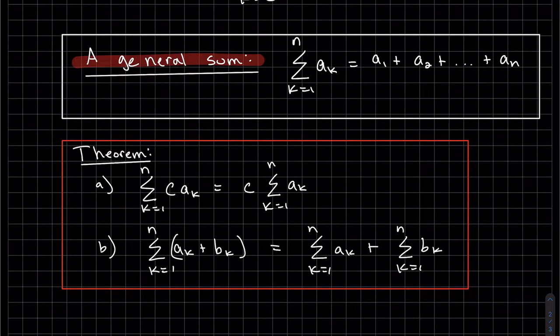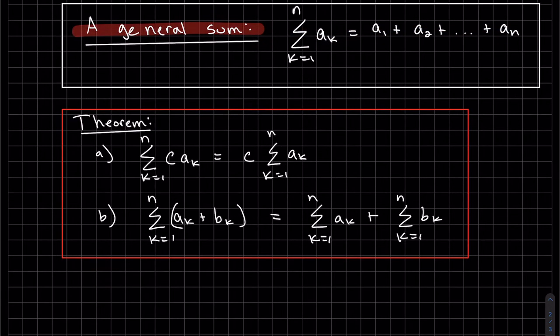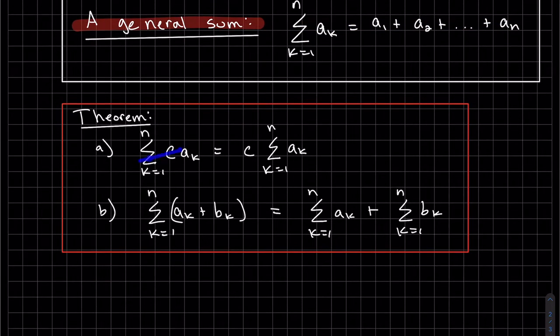So again, using the a_k as a general sum, we have a theorem that pretty much says if we have a sum and there's a constant in here, well, think about a constant being in front of each of them. It would be in front of each term. So you can factor that out. The other part of the theorem says if we have two different terms, well, we can basically distribute that sum.